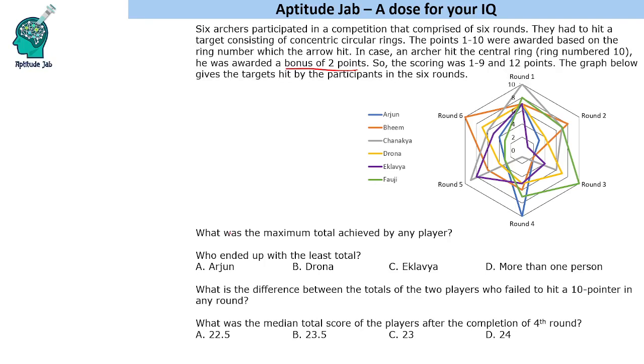Let us try to understand how we should attempt such questions in the examination in the best possible way. If I look at the first question, maximum total achieved by any player - we cannot get the maximum total directly, so we will have to add these numbers. Maybe we will have to add for 4 people or so to identify the maximum total. Second question, who ended up with the least total? We are given 3 options and fourth says more than 1 person. So we will not have to add everything. We will have to add 3 of them.